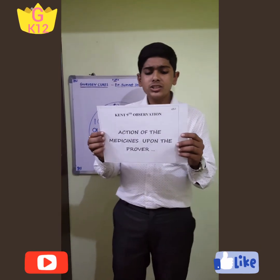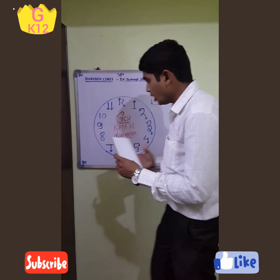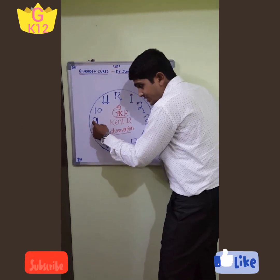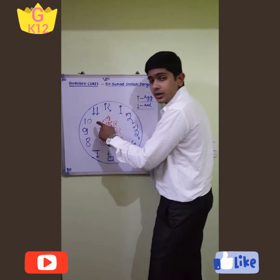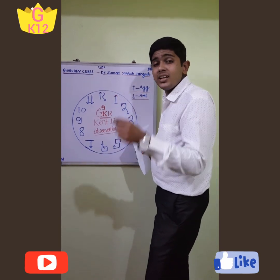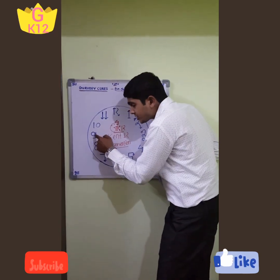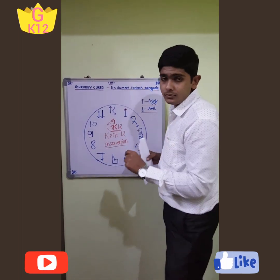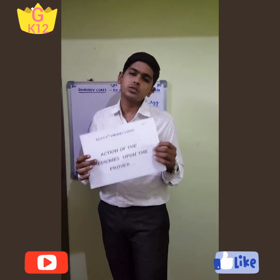The ninth observation is the action of the medicine upon the prover. To remember this, the ninth number digit is converted into two forms — one is zero and one is ten. After giving the medicine, the medicine is going to be proved by the patient and the action of the medicine is going to happen on the patient. This is the ninth observation: action of the medicine upon the prover.